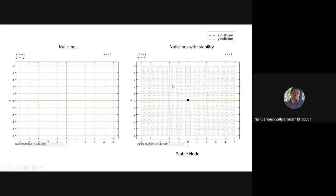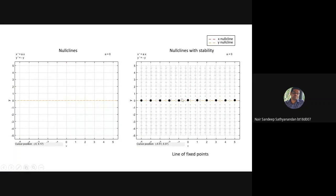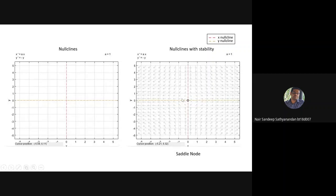As you vary the parameter a, you can see the slope of the trajectories changing. It converges a little more quickly for larger negative values; when a = -0.5 the convergence is slightly slower. When a = 1, that is an unstable fixed point and all the trajectories diverge.